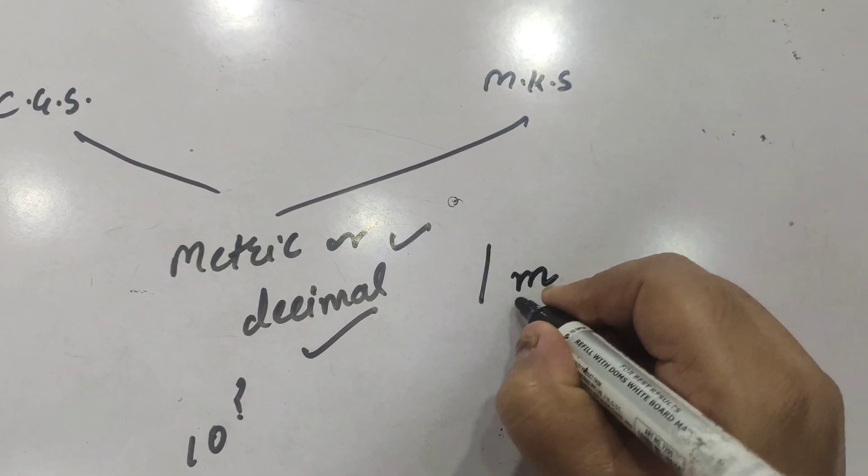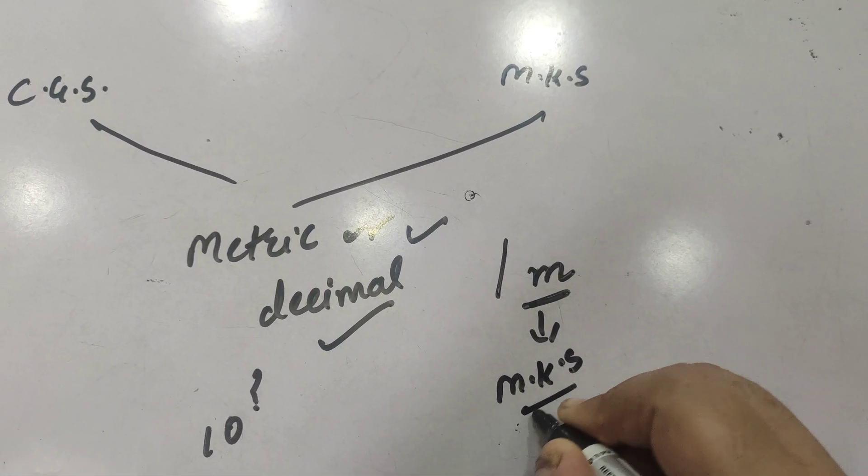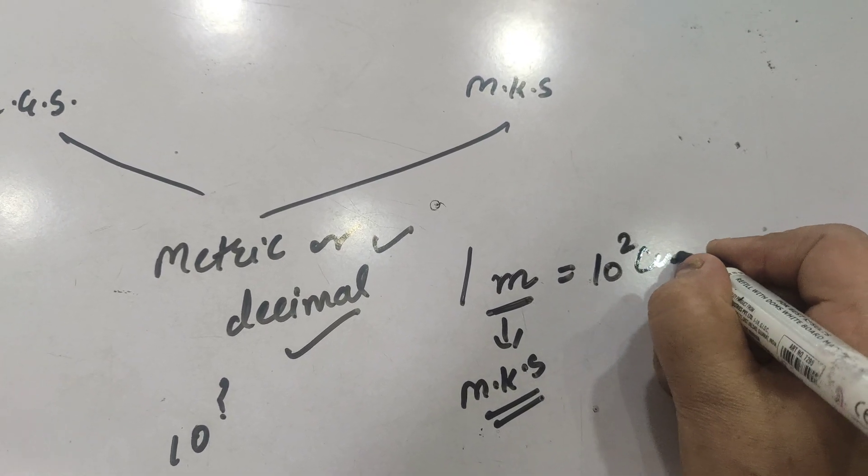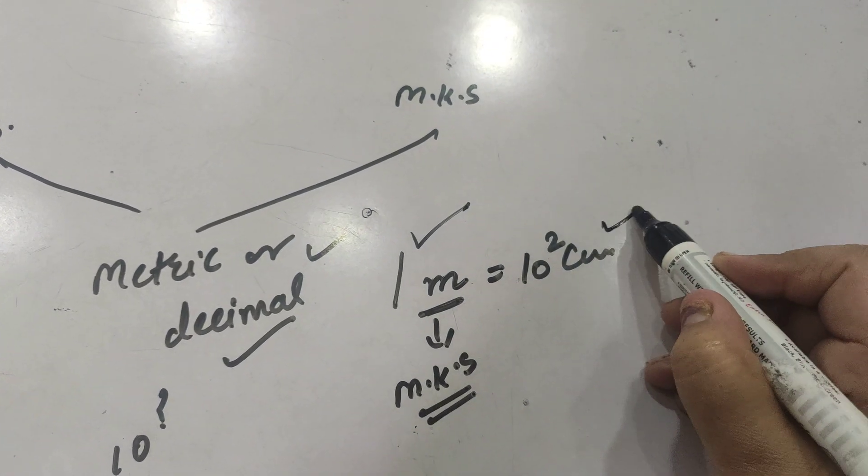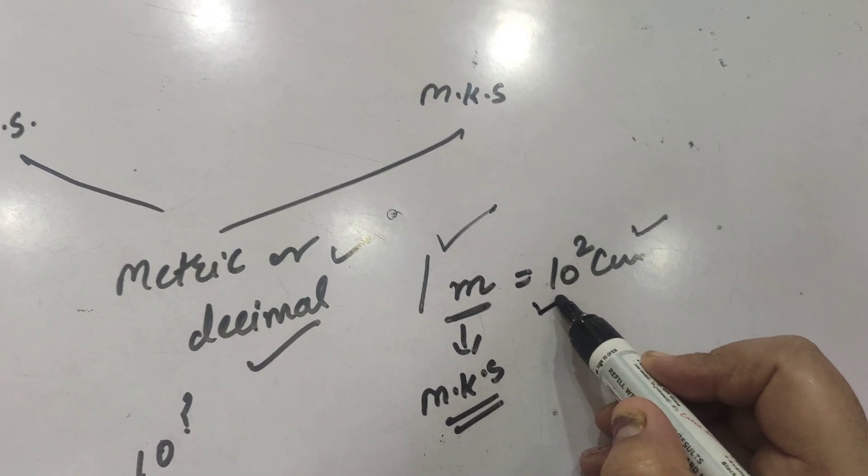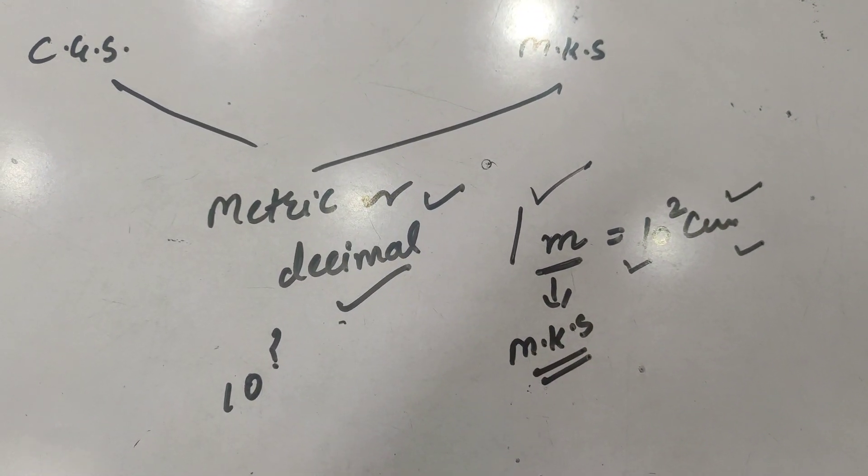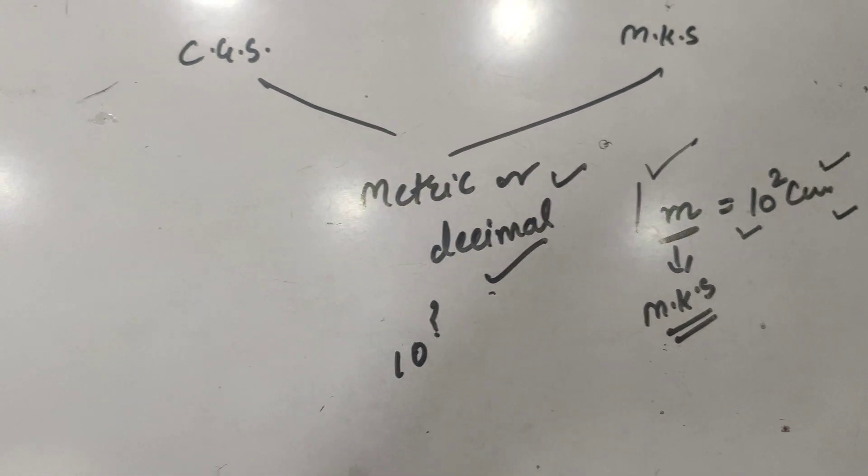talking about 1 meter - here meter is the MKS system unit - this could be written as 10 raised to power 2 centimeter. It means meter can be represented in parts of 10 in the CGS system of units. So that is why these are called metric or decimal number systems.